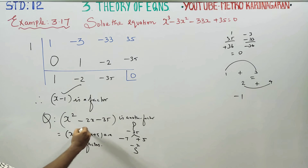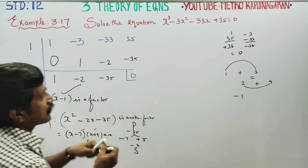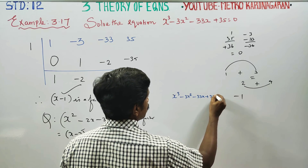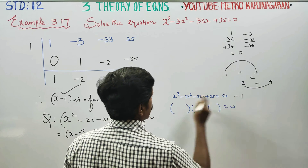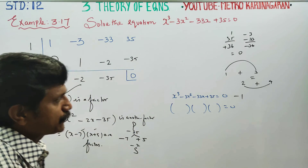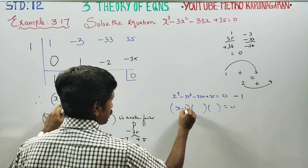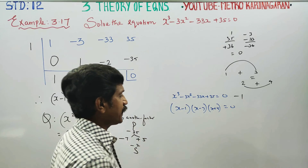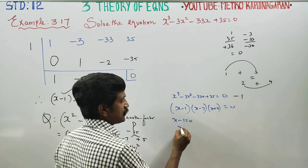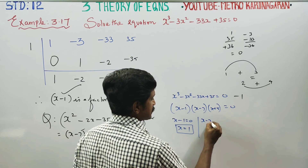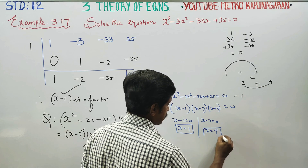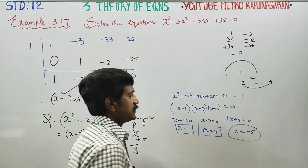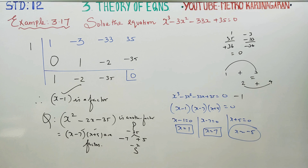So x³ - 3x² - 33x + 35 = 0 has three factors. The 1st factor gives x - 1 = 0, so x = 1. The 2nd factor gives x - 7 = 0, so x = 7. The 3rd factor gives x + 5 = 0, so x = -5. These are the three solutions. Thank you.